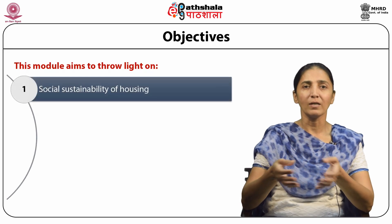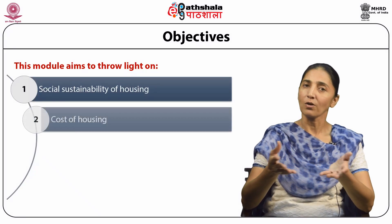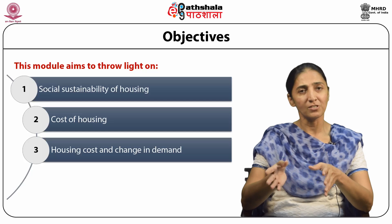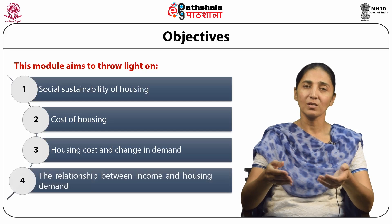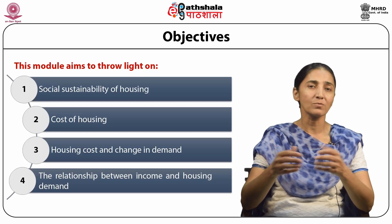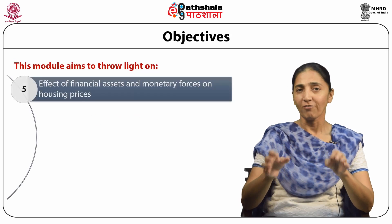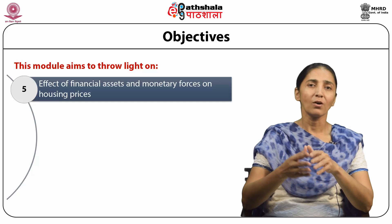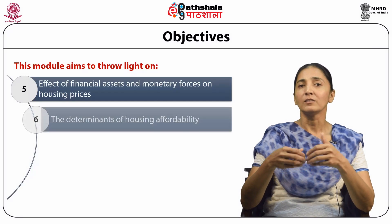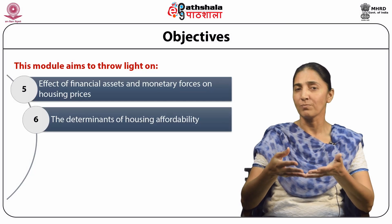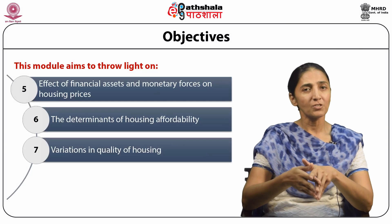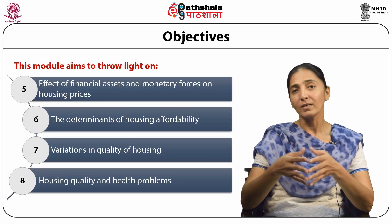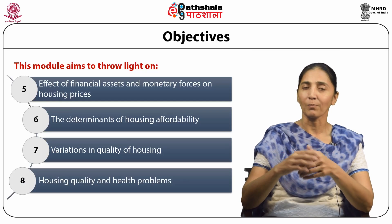This module aims to throw light on social sustainability of housing, cost of housing, housing cost and change in demand, the relationship between income and housing demand, effect of financial assets and monetary forces on housing prices, the determinants of housing affordability, variations in quality of housing, and housing quality and health problems.